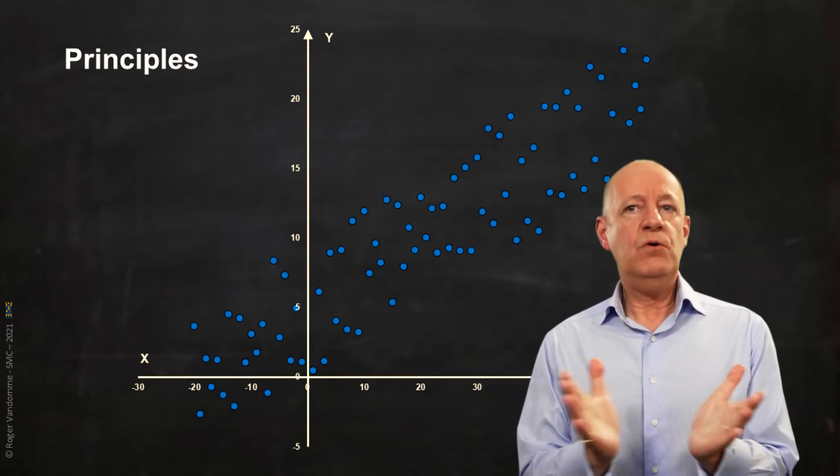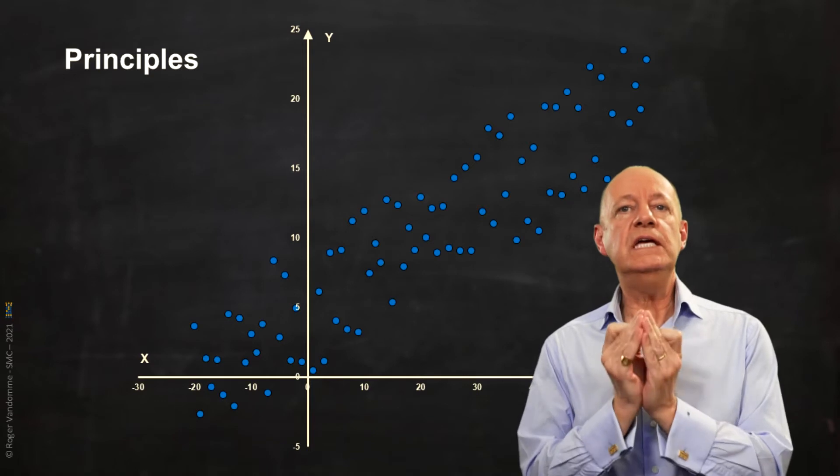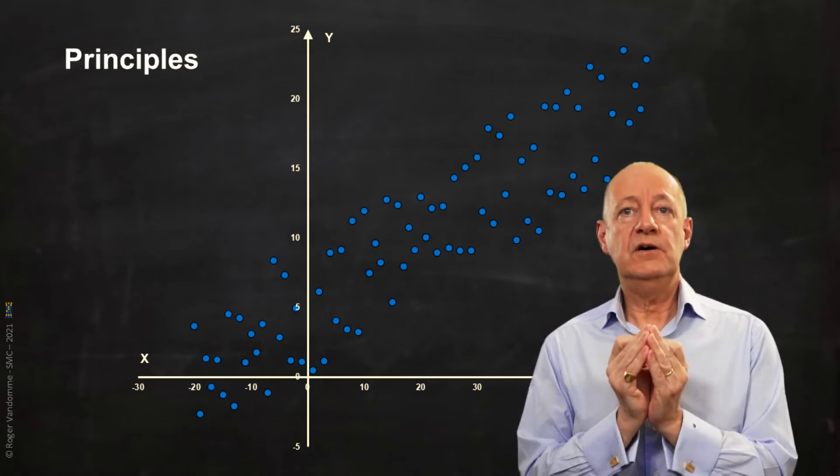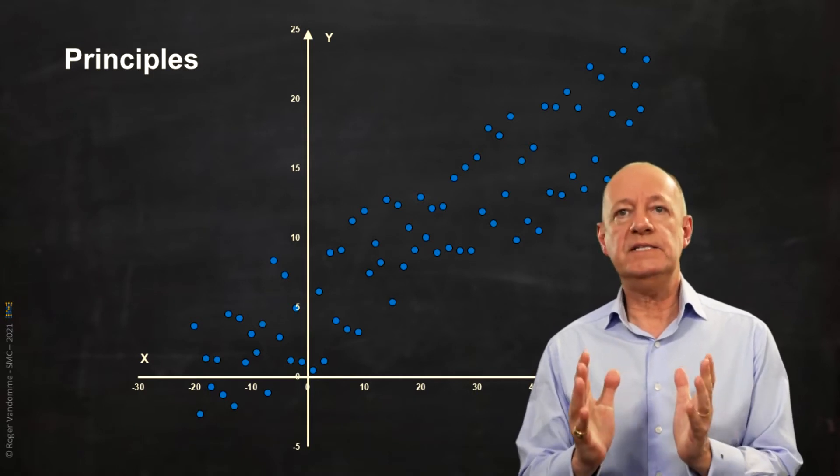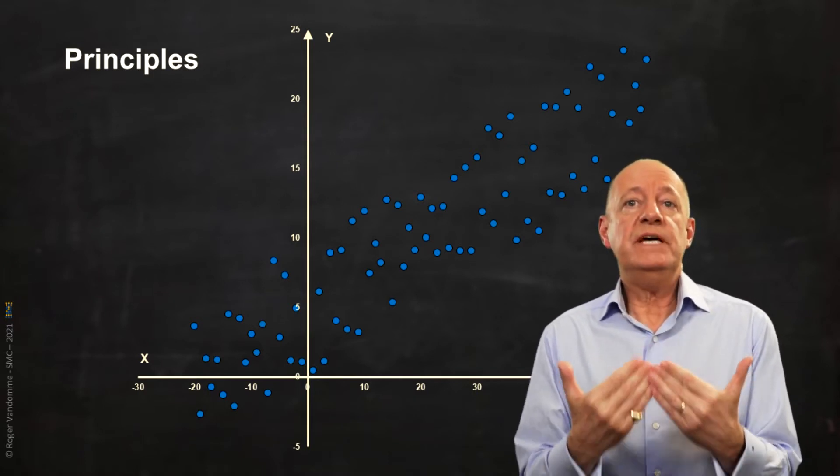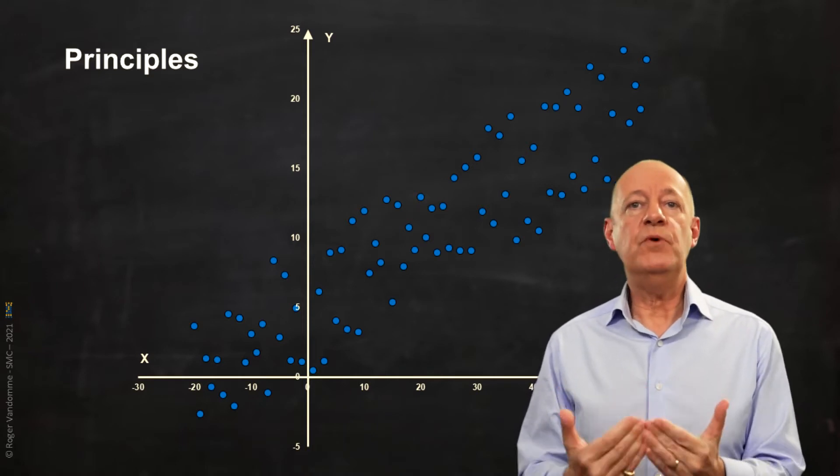Our goal, always the same, is to be able to predict the value of y if we know x. For this, we will simplify the relationship between x and y, that is to create a model, and we will summarize this relationship with a line.